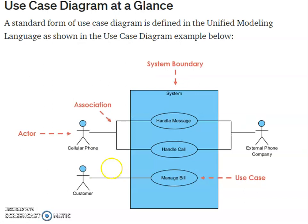And this is the overall view of the use case diagram in unified modeling language, UML. This is the system boundary. This rectangle represents the system boundary. Then actors are here. Actors are represented by this symbol. Cellular phone is an actor, and external phone company is an actor, and customer is also an actor.